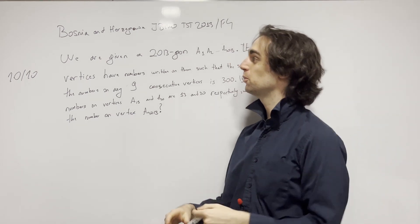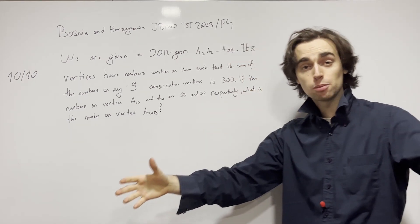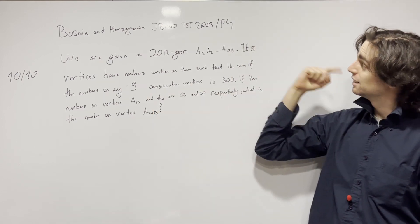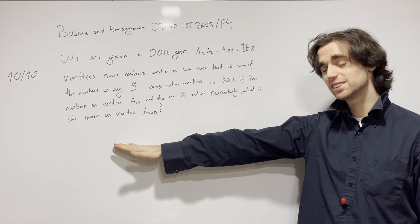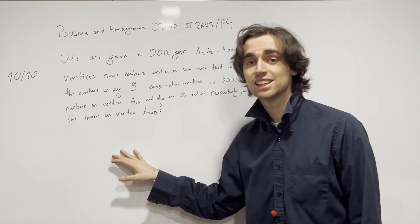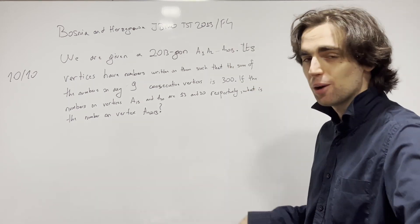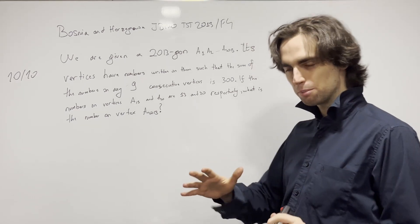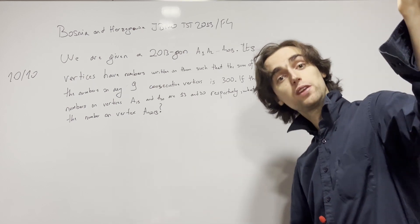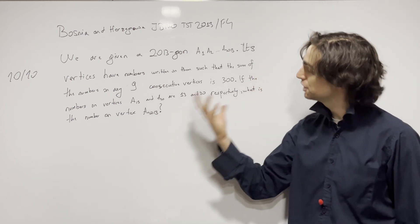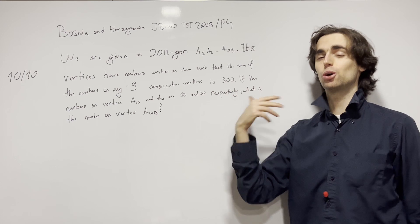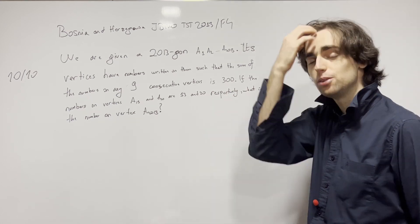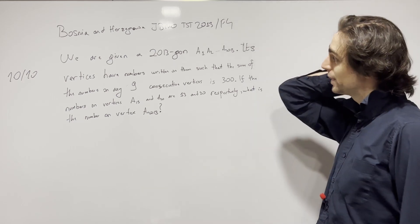Hello fellow problem solvers! We're going to be doing a problem from my second junior math Olympiad team selection test, which I passed — problem number four. I suggest you try this nice combinatorics problem out for a minimum of 20 minutes, ideally 40 minutes to an hour, especially if you're preparing for the junior levels or just starting out with combinatorics. It's a nice problem to really hone those combinatorics skills.